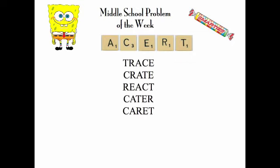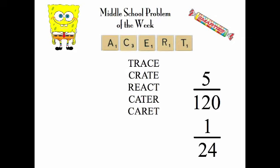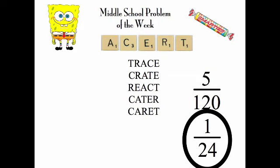For the other part of the question, we asked our crack team of experts at the Problem of the Week to think of five-letter English words that could be made up from these five letters, and here are the five we came up with. So the probability of placing the tiles in one of these five ways out of the 120 possible is five over 120, which in lowest terms is 1/24 — the answer to this week's Problem of the Week.